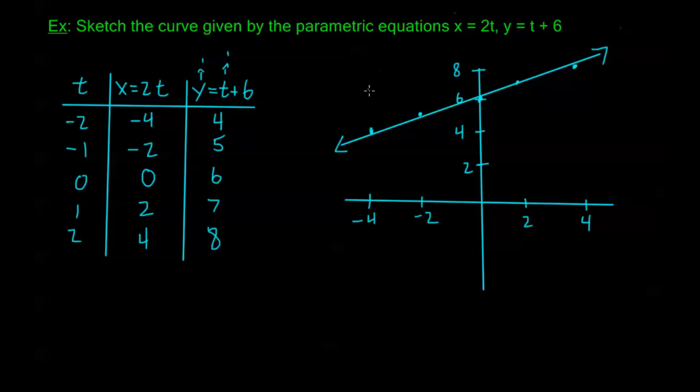The slope here is 1/2, because every time that y goes up by 1, x is going up by 2. So that means my slope is 1/2. And my y-intercept here is 6. And we'll come back to this problem in the next video.